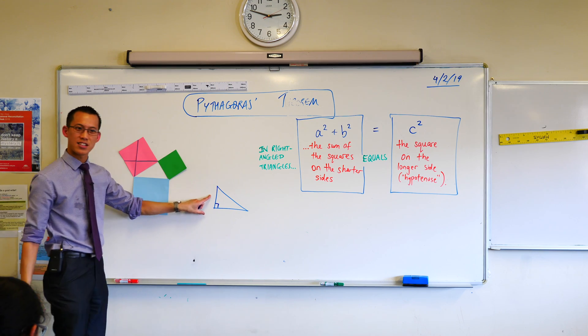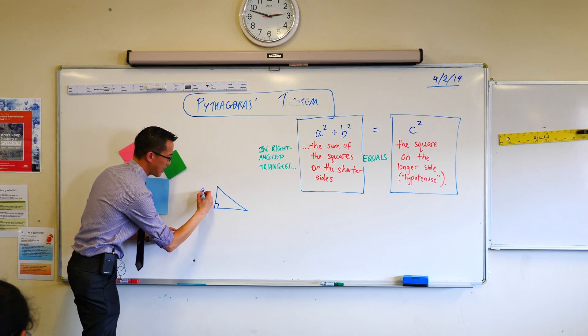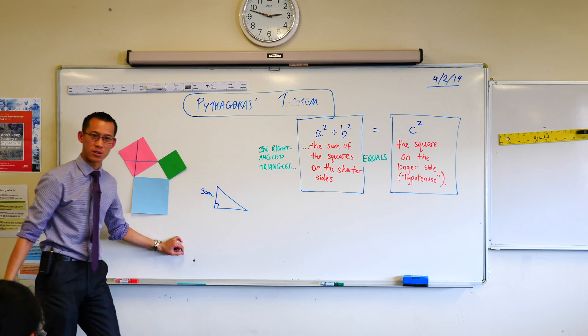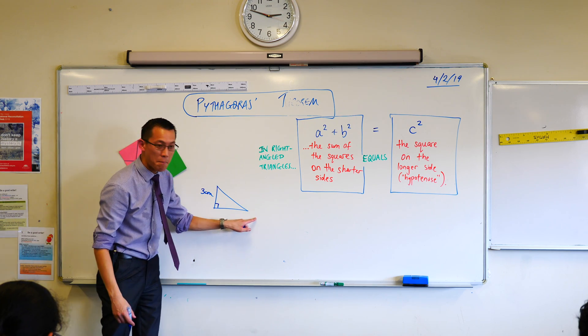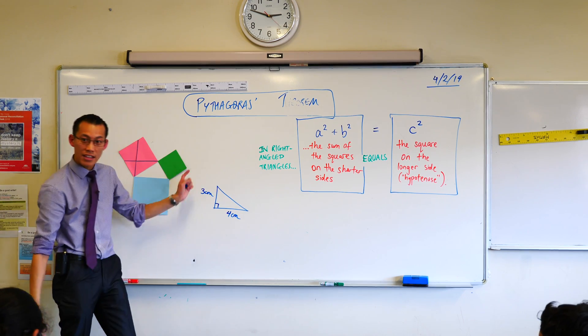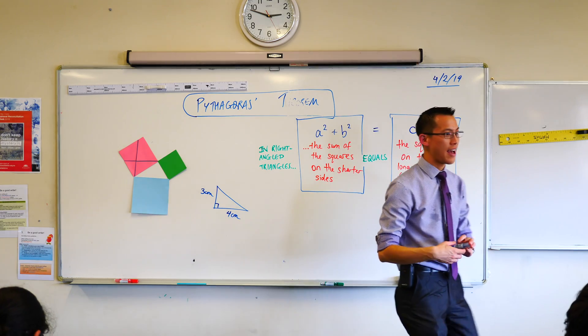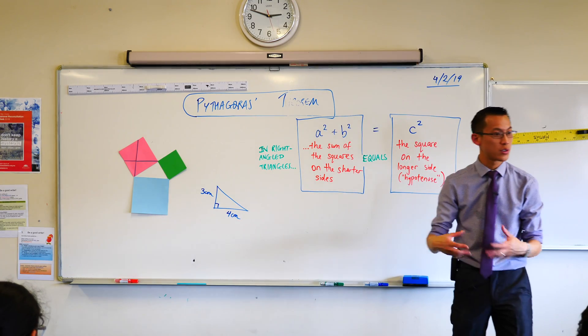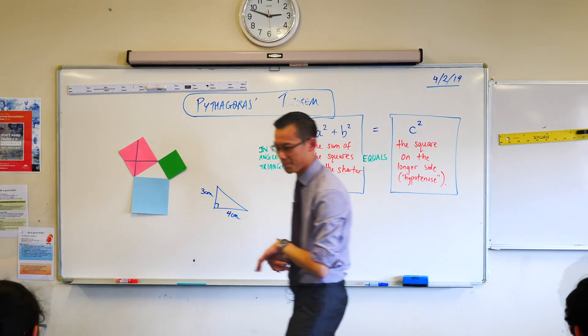Measure this out so that the lengths are these particular lengths. Make this sort of short squat side here, make it exactly three centimetres long. This one down the bottom, make it four centimetres long. And then join them up. And then I want you to measure how long it is once you've joined up those two sides. Can you do that for me?